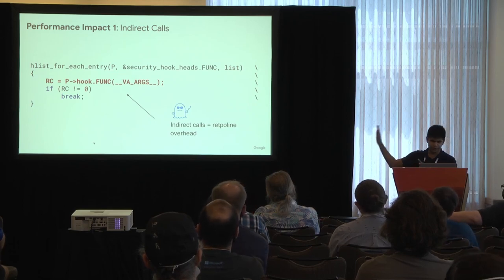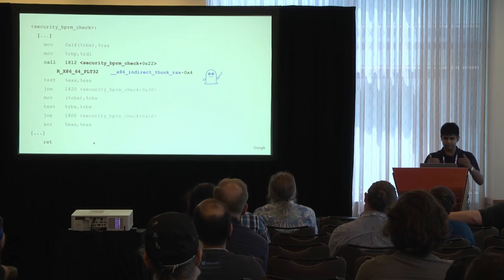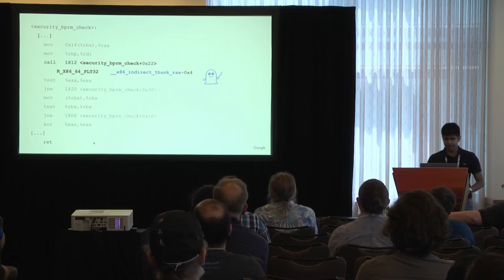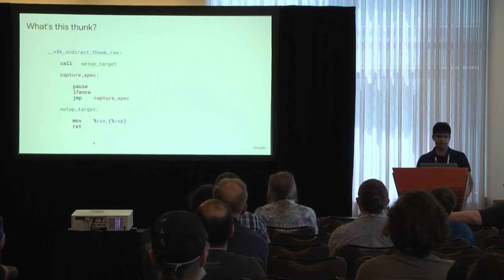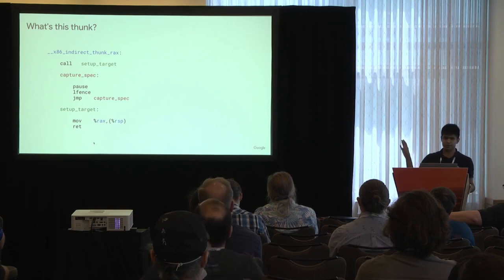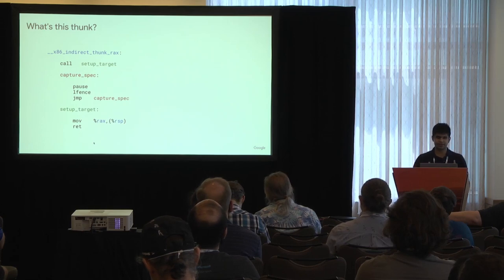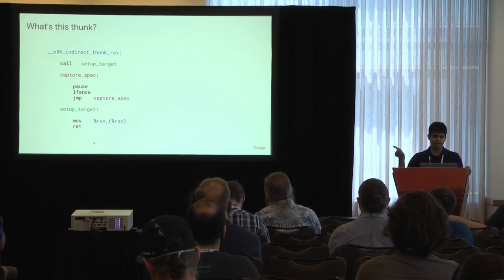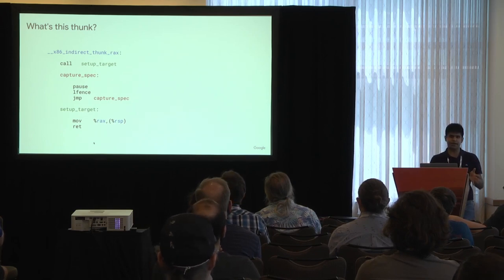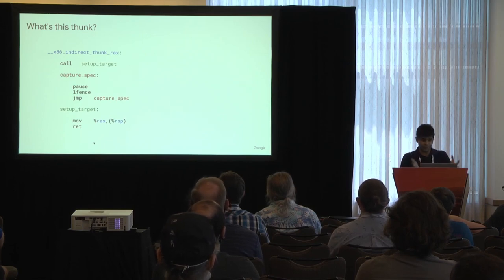The speculation window is larger especially when the address is not readily available. There is a mitigation called retpolines for indirect calls. What a simple function pointer call looks like in assembly is it calls this symbol: 'call __x86_indirect_thunk_rax.' This thunk jumps to a different part of the kernel executable and calls something called 'setup_target.' The CPU starts speculating it will return to 'capture_spec' and runs an infinite loop in its speculative execution engine. Then setup_target does something clever — it moves the address in RAX to the stack pointer and does a ret instruction. All of this sequence adds overhead.